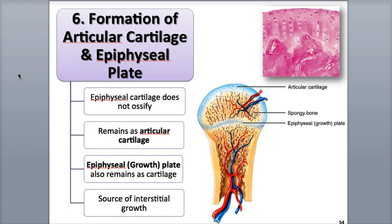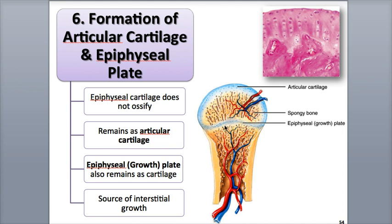In the final step, step 6, formation of articular cartilage and the epiphyseal plate: most of the hyaline cartilage in the epiphyses becomes spongy bone, except for the outermost coverings, which remain as hyaline cartilage and function as articular cartilage, found at the joints or articulations where bone meets bone. We also have cartilage left at the epiphyseal or growth plates, which function in growing the length of the bone.